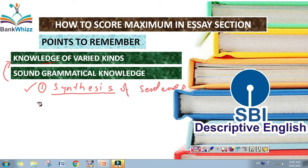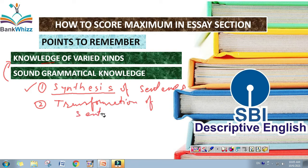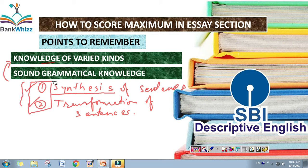The second important chapter to focus on for effective writing is 'Transformation of Sentences.' This chapter can easily be found in the recommended books. If possible, you should also purchase the keys for Wren and Martin and Nesfield. Covering these two chapters thoroughly will definitely develop a lot of confidence in effective essay writing.